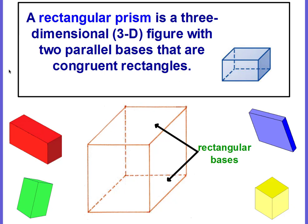A rectangular prism is a three-dimensional, also called 3D, figure with two parallel bases that are congruent rectangles. Remember that word congruent means equal or the same. So let's talk about this. It's three dimensional and it has two parallel bases.